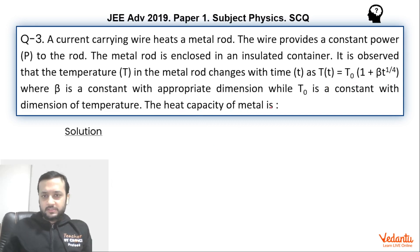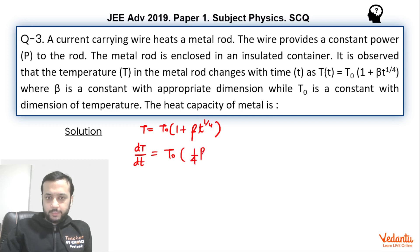So as you can see, if you see this function which is being given over here, temperature is given as T₀ into 1 plus beta into T^(1/4). If you find the rate of change of temperature, so this will be simply T₀ into this will become 1/4 into beta into T to the power minus 3/4.